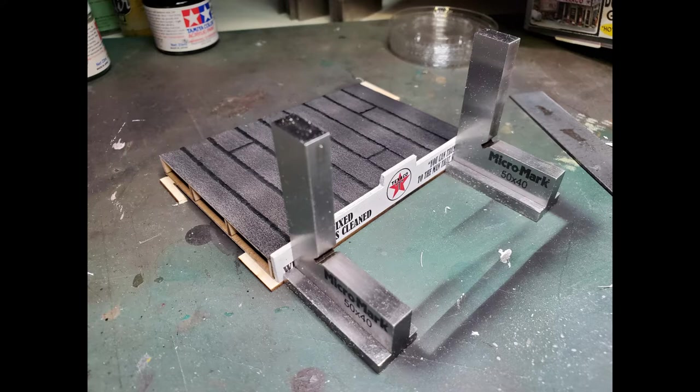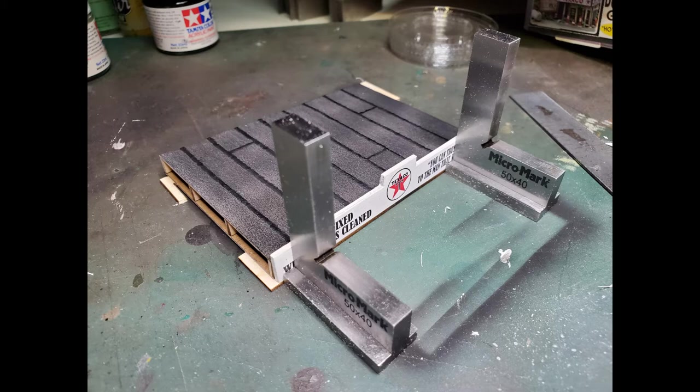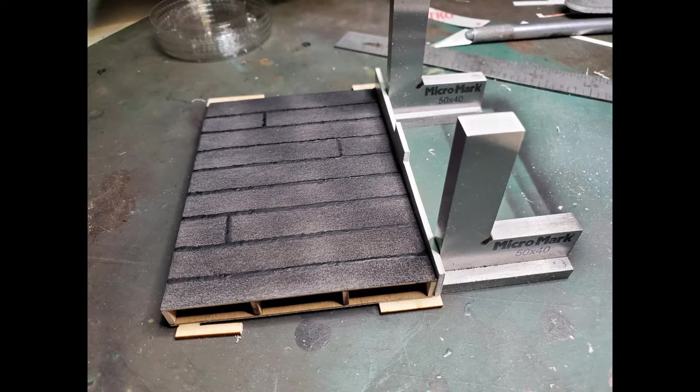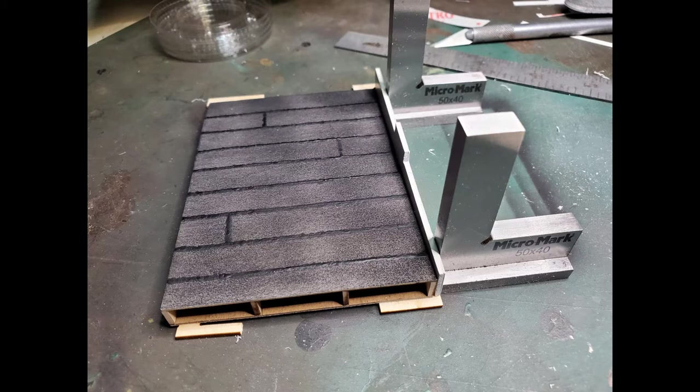After the stickers were applied, I glued the boards in place on the roof. And I used squares to make sure everything was perpendicular to the roof surface and nice and square at 90 degree angles. Because the front board and the side boards have to meet up and it needs to look nice and square.